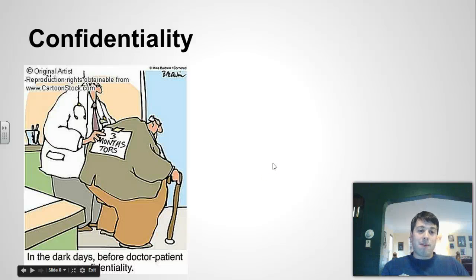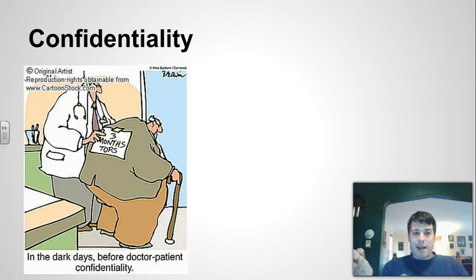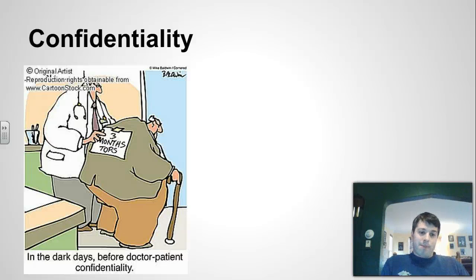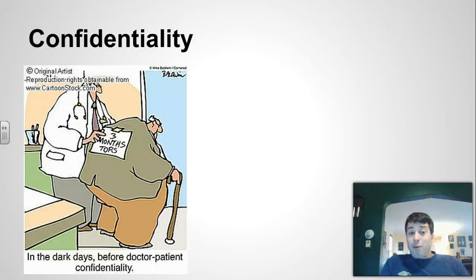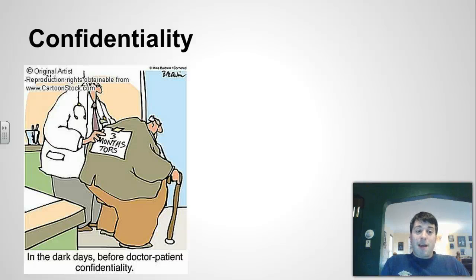The next piece is confidentiality — anything that is said in the doctor-patient relationship that has to do with the person's medical history must be kept confidential. Why is that important? It's important because if the entire community knows about a person's medical problems, those problems could be used against them. If you know, for example, that somebody has mental illness, that information could be used to keep that person from getting a job. If you know that someone has cancer, that information can be used against that person.